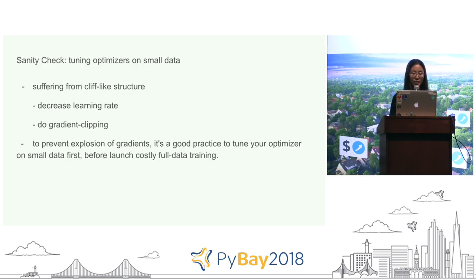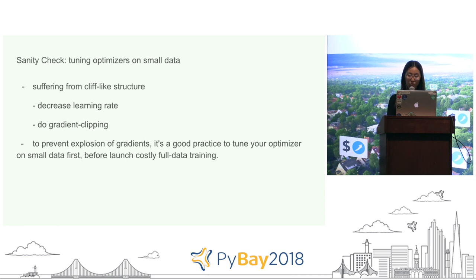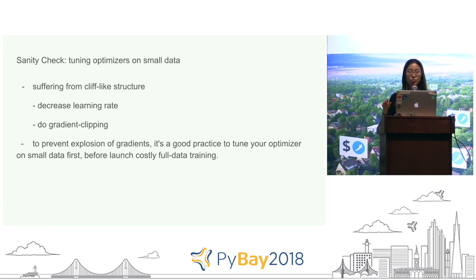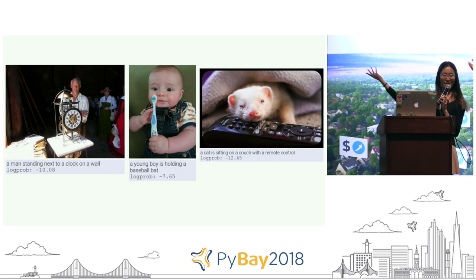This is probably because the numerical optimization algorithm is suffering from some cliff-like structure on the loss function surface. We can try to decrease the learning rate and do some gradient clipping to prevent the optimization algorithm from going somewhere really far and getting stuck. It's always good practice to tune your optimizer on small data first to get a good learning rate before launching the full data training. And here are some good results — 'a young boy is holding a baseball bat.'